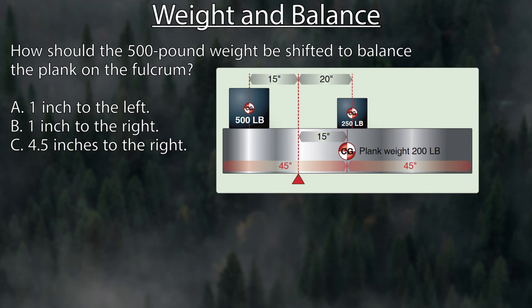Here's a weight and balance question that you might see on the written test: how should the 500-pound weight be shifted to balance the plank on the fulcrum? You have the big plank at 200 pounds, slightly offset to the right of the fulcrum by 15 inches. On the right side, there's a 250-pound weight with a 20-inch arm. On the left side, a 500-pound weight at 15 inches. The question is: how do you balance it?